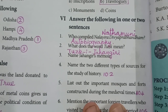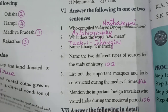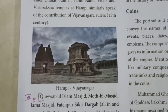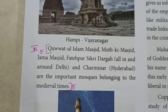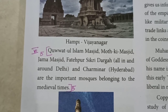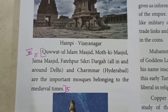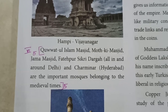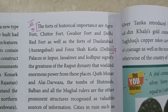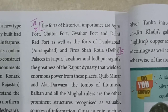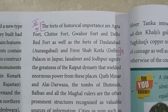List out the important mosques and forts constructed during the medieval times, from page 104. The important mosques are Quwat-ul-Islam Masjid, Mothi Masjid, Jama Masjid, Fatehpur Sikri, Dargah — all in and around Delhi — and Charminar in Hyderabad. The forts include Agra Fort, Chittur Fort, Gwalior Fort, Delhi Red Fort, and also the forts of Daulatabad and Feroz Shah Kotla in Delhi.